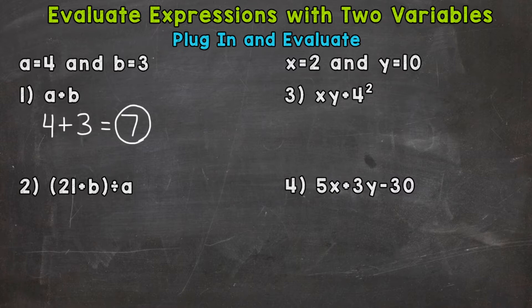Let's go on to number 2, where we have parentheses 21 plus b, end parentheses, divided by a. So let's plug in and evaluate. 21 plus 3, end parentheses there, divided by plug in 4 for a.